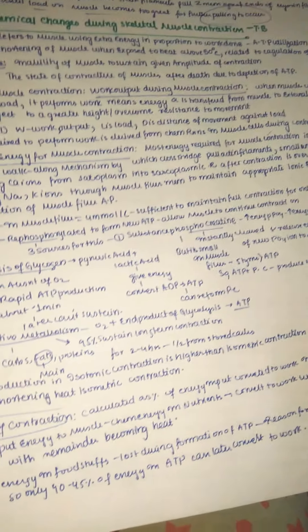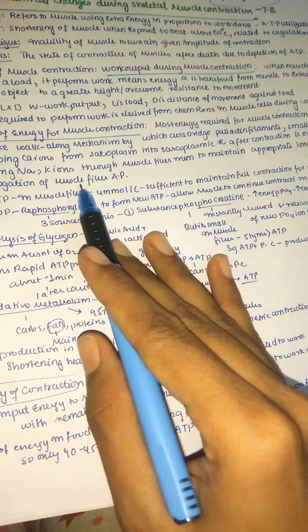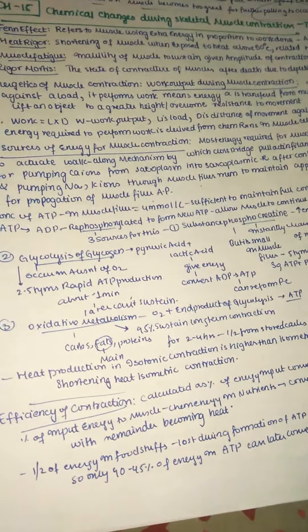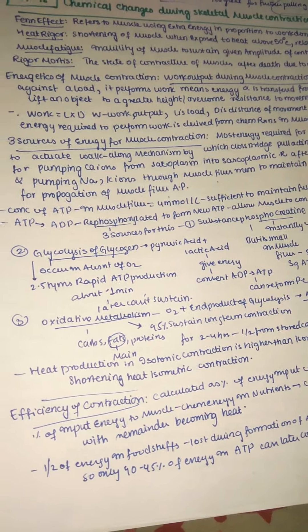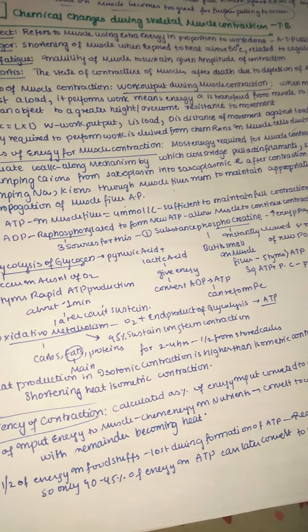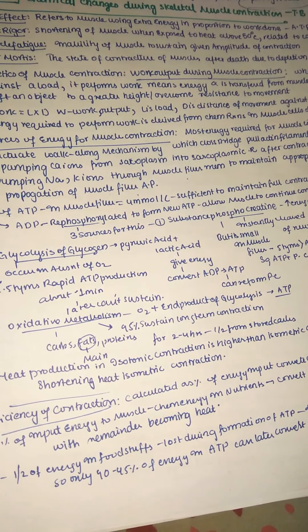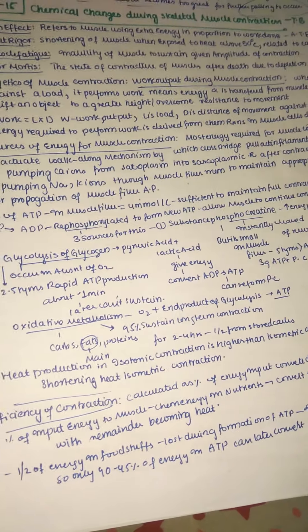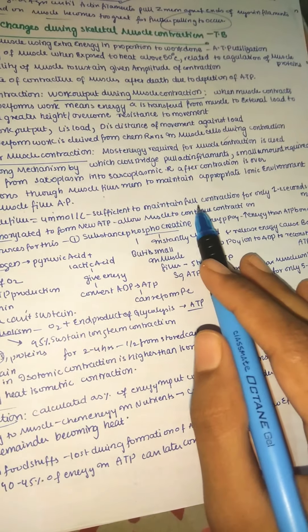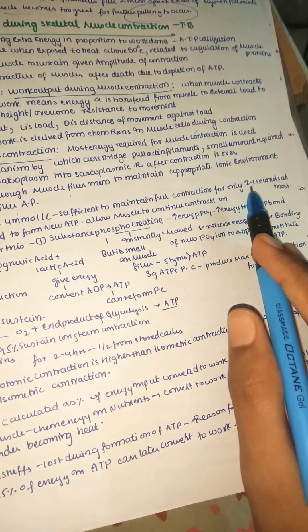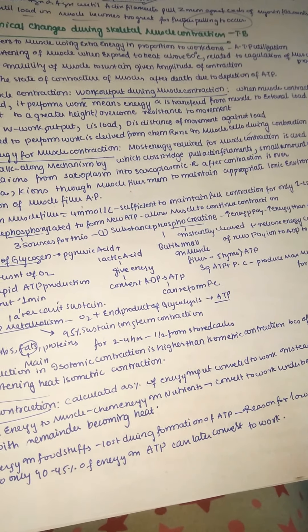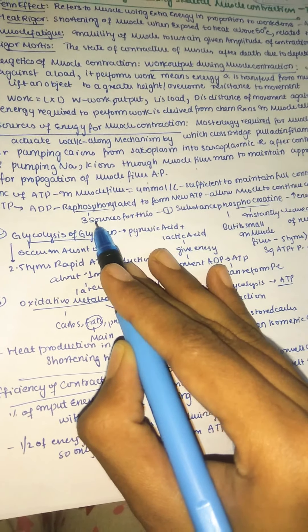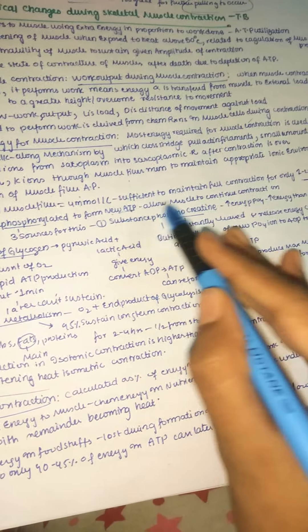A small amount of energy is also required for pumping sodium and potassium ions through the muscle fiber membrane to maintain the appropriate ionic environment for propagation of the muscle fiber action potential. The concentration of ATP in a muscle fiber is about 4 millimoles per liter, sufficient to maintain full contraction for only one to two seconds. ATP breaks down into ADP and is rephosphorylated to form new ATP, allowing the muscle to continue contracting.